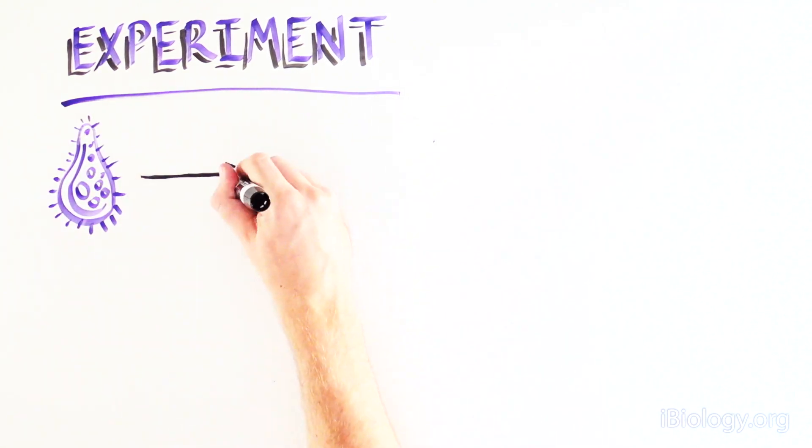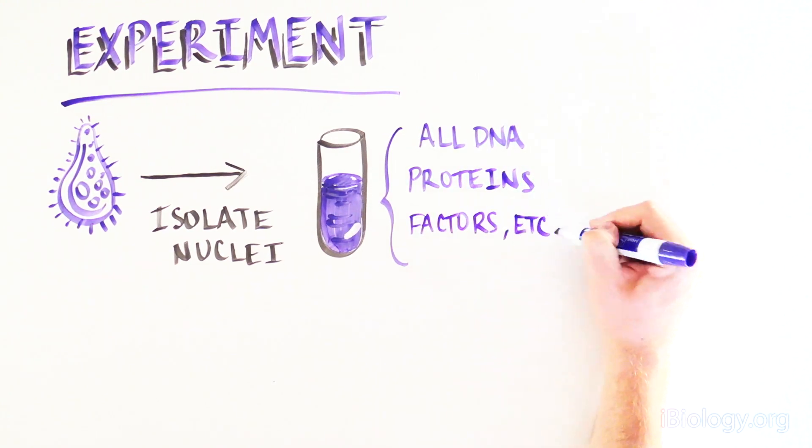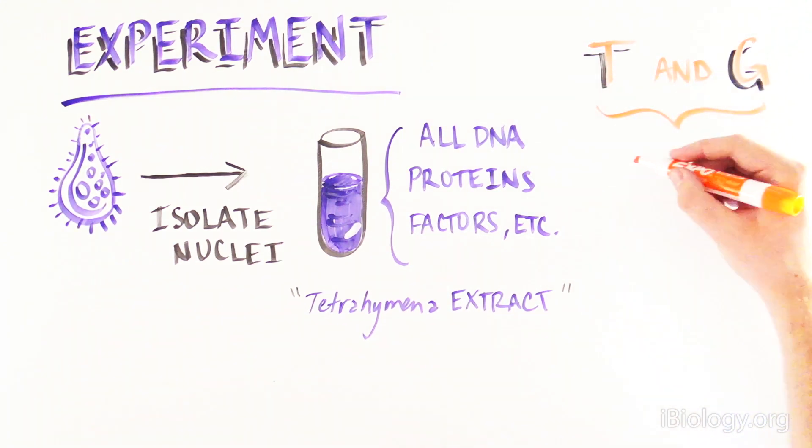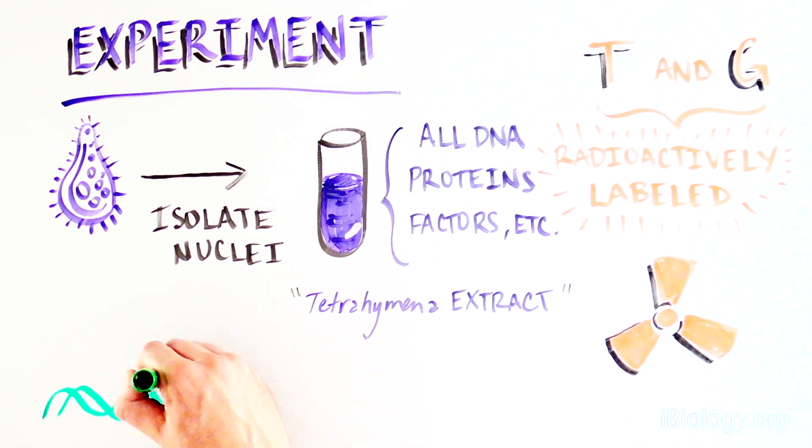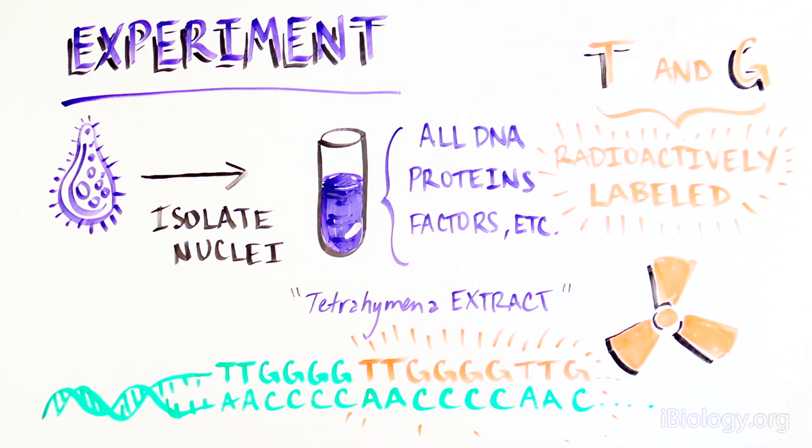These scientists isolated the nuclei of tetrahymena, which contains all of the DNA and lots of other proteins and factors. We'll call this the tetrahymena extract. They labeled T or G nucleotides with radioactivity. These nucleotides would be incorporated into the newly formed telomeres and radioactively label this new sequence. The scientists mixed the extract, radioactively labeled T and G nucleotides, and a single stranded DNA template that mimics an already existing telomere in a test tube.